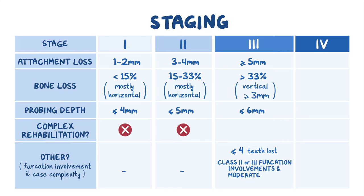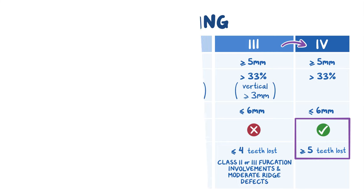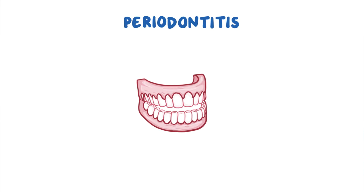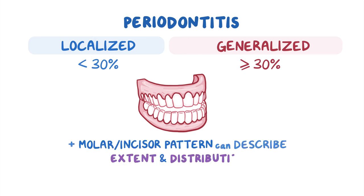Stage four is also characterized by severe attachment loss of five millimeters or greater or bone loss over 33%. However, patients with stage three characteristics who have lost five or more teeth due to periodontitis or have complex rehabilitation needs should be classified as stage four. Periodontitis is considered localized if less than 30% of the teeth are involved, and generalized if 30% or more of the teeth are involved. A molar-incisor pattern can also describe the extent and distribution when appropriate.